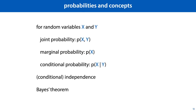So now that we have the basic language of probability theory in place, we can look at some of its most important concepts. We will quickly review five concepts: joint probability, marginal probability, conditional probability, independence and conditional independence, and Bayes' theorem.